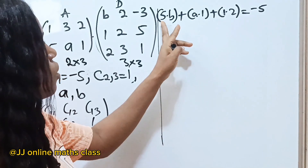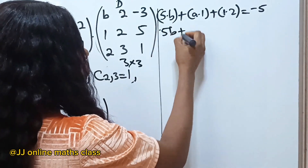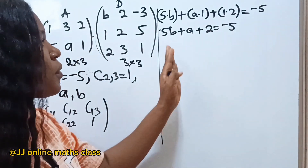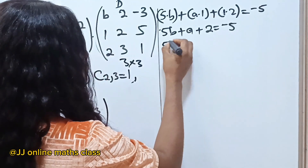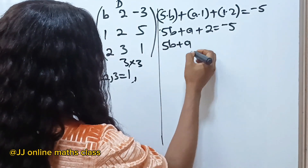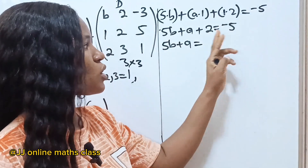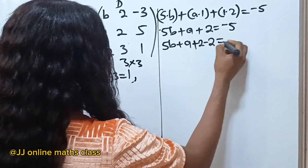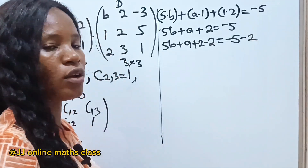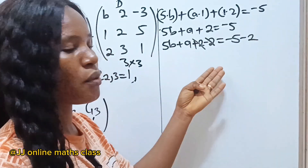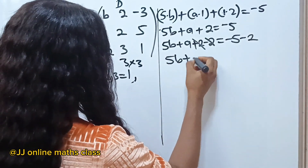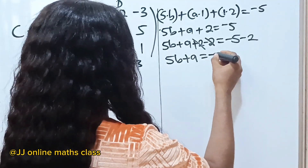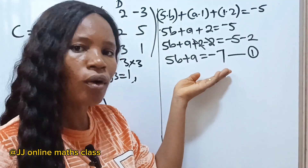Simplifying: 5b + a + 2 = -5. Subtracting two from both sides gives 5b + a = -7. Let's call this Equation 1.